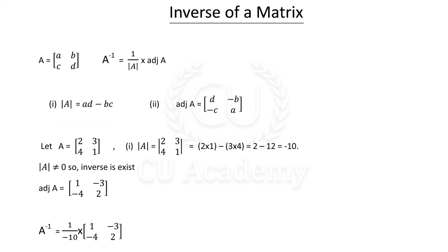Let's do a 2 by 2 matrix: 2, 3, 4, 1. That's a 2 by 2 matrix. Let's find the inverse. The determinant is found by cross multiplication. Determinant is equal to 2 into 1, which is 2, minus 3 into 4, which is 12. So 2 minus 12 is equal to minus 10. Since the determinant is not equal to 0, the inverse exists.